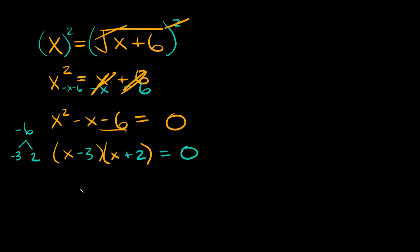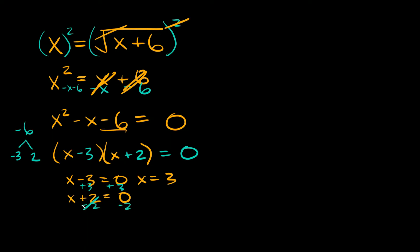To solve for x, set each factor equal to 0. We have x minus 3 equals 0 and x plus 2 equals 0, giving us two potential solutions. For the first one, add 3 to both sides: x equals positive 3. For the second, subtract 2 from both sides: x equals negative 2. Now, for any of these problems it's always important to check your solutions because some might not actually work.